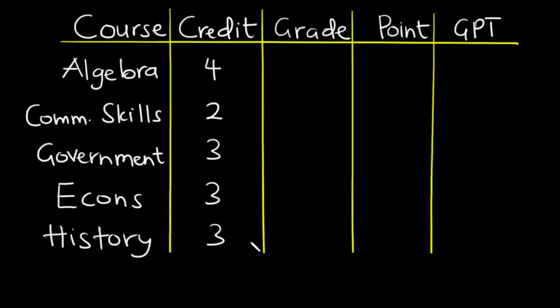So now let's talk about the grades for each course. Let's say you had an A in algebra, a C in comm skills, a B in government, B plus in economics, and maybe a D in history. Now, what do you think will be your GPA for this particular semester?